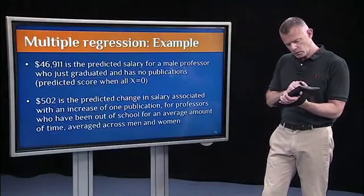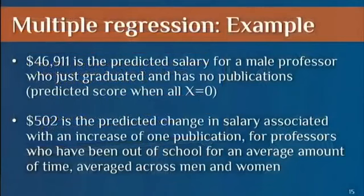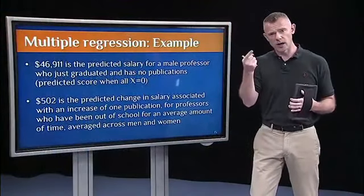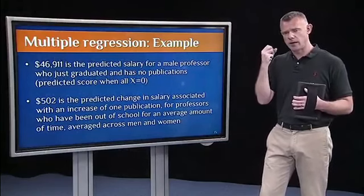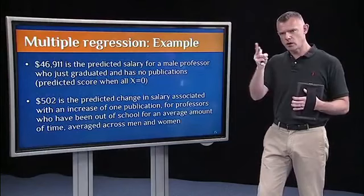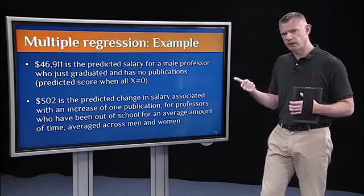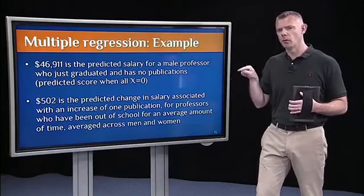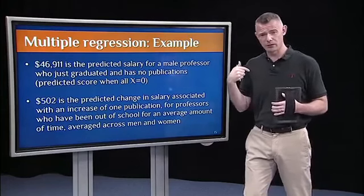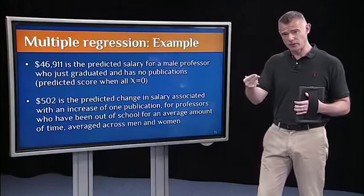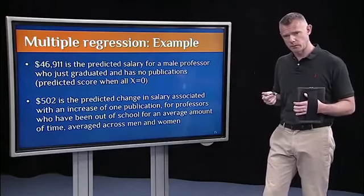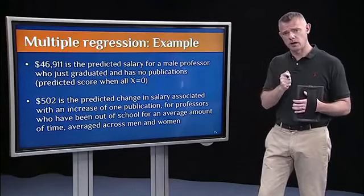Let's answer those. So 46,911 was the regression constant. What is that? It's the predicted score on Y when all the X's are 0. So it's when someone has no time since their PhD, so they just graduated. They have no publications. And what was coded as 0? Well, I coded men as 0. So 46,911, if you think back to the summary statistics, that's a really low salary. Why is it so low? Because it's the predicted salary for someone who just graduated and has no publications and is male, because I coded male as 0. So that's how to interpret the regression constant in this example.